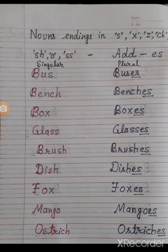Bus → Buses. Bench → Benches. Box → Boxes. Glass → Glasses. Brush → Brushes. Dish → Dishes. Fox → Foxes. Mango → Mangoes. Ostrich → Ostriches.